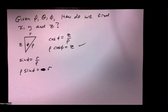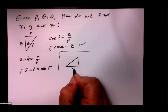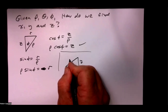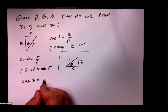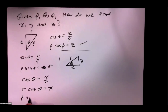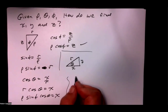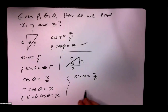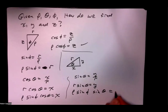Now we need to find x and y. Using the other triangle in the xy plane — with sides x, y, r, and angle theta — the cosine of theta is x over r, so r cos theta equals x. But since r equals rho sine phi, we get rho sine phi cos theta equals x. Similarly, sine of theta is y over r, so r sine theta equals y. Since r is rho sine phi, rho sine phi sine theta equals y.